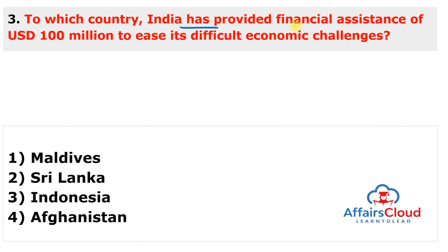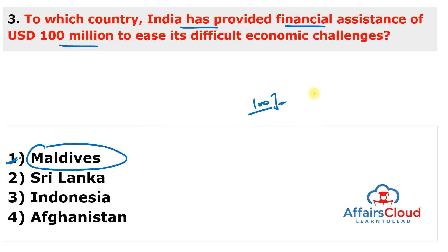Question 3: To which country has India provided financial assistance of 100 million dollars to ease difficult economic challenges? The answer is Maldives. India provided 100 million dollars in budgetary support to the Maldives government. A symbolic check was handed over by India's High Commissioner to the Maldives under the Minister of Foreign Affairs during a ceremony at the Ministry of Foreign Affairs in Maldives. The partnership will provide crucial assistance in Maldives' progress and development.